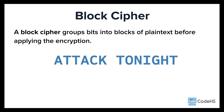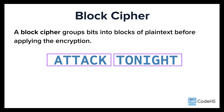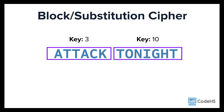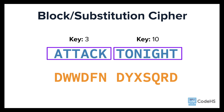A block cipher can add complexity to a cipher by grouping bits into different blocks and then encrypting each block with a different key. Let's split this phrase by each word for simplicity. We'll encrypt the first block with a key of 3 and then the second block with a key of 10.